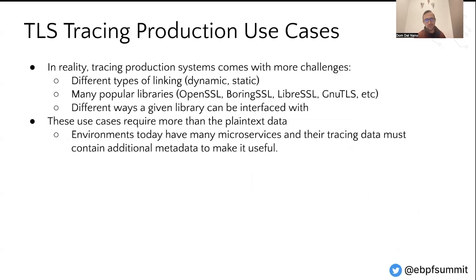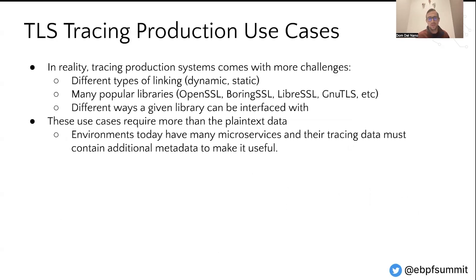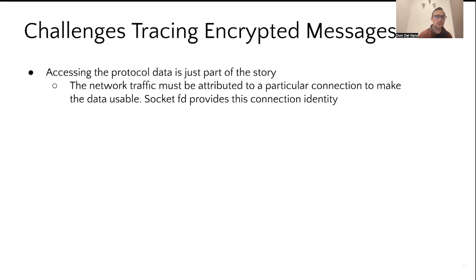However, tracing production systems comes with additional challenges. There are different types of linking for these libraries, there's a variety of popular libraries, and ideally we could cover many of them with a single implementation. Even the way you use the library can also create challenges. What I'm trying to articulate is that having access to the plain text data isn't enough. When you're trying to debug production services, that tracing data needs additional metadata in order to be useful. The way that Pixie's initial form of TLS tracing addresses this is by using a socket FD to provide connection identity.